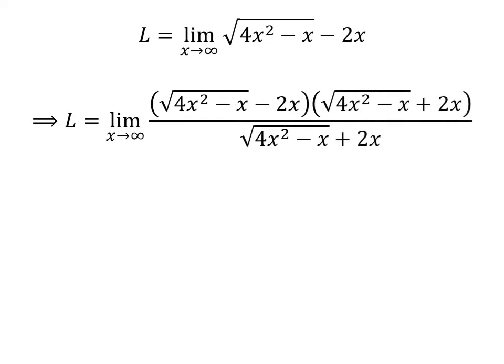Multiplying the numerator and the denominator of a fraction by a common factor does not change the value of the fraction. So let us multiply the numerator and the denominator by the common factor square root of 4 times square of x minus x, plus 2 times x.